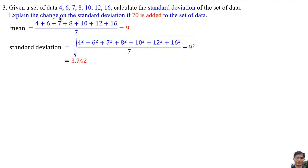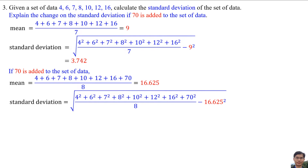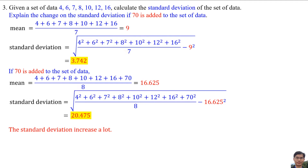The question also asks to explain the change in standard deviation if 70 is added to the set of data. So we add 70 to the set of data. The new mean is 16.625. The new variance is computed by adding 70 squared to the sum, divided by the new total, minus the new mean 16.625 squared. So the new standard deviation equals 20.475. Comparing the original and new standard deviation, the standard deviation increases a lot when 70 is added, because 70 is an outlier.